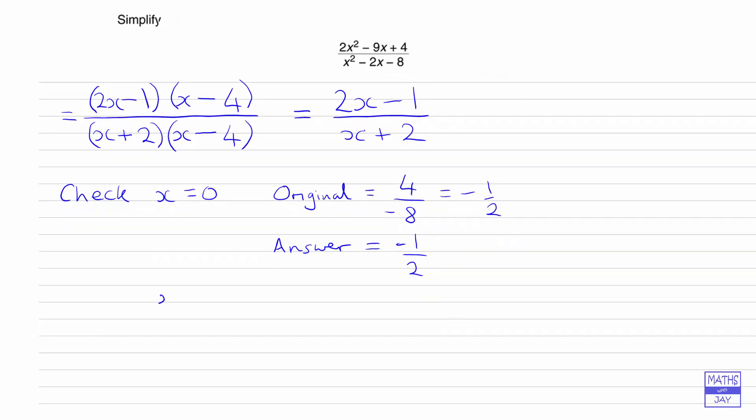Let's try x is 1. The original is going to be 2 minus 9 plus 4, all over 1 minus 2 minus 8. We've got minus 3 over minus 9, so that would be a third.